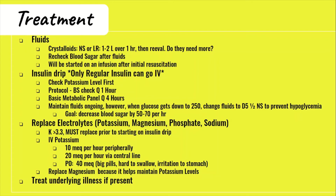If potassium is less than 3.3, you cannot start the insulin drip, so knowing how to replace it safely is critical. Never push potassium IV — it can cause a deadly cardiac rhythm. Give up to 10 mEq per hour peripherally, or up to 20 mEq per hour via central line, due to safety limits and because potassium is very irritating to veins and can cause severe pain. You can give up to 40 mEq by mouth, though it is also irritating to the stomach and the pills are large. Replace other electrolytes as well — magnesium specifically helps maintain normal potassium levels. Always treat the underlying illness, most commonly a UTI or pneumonia.